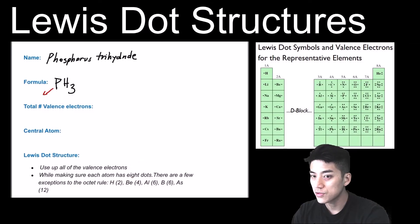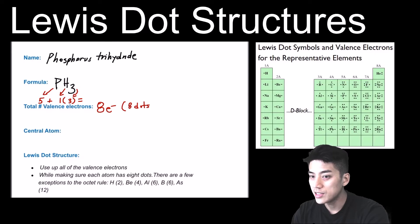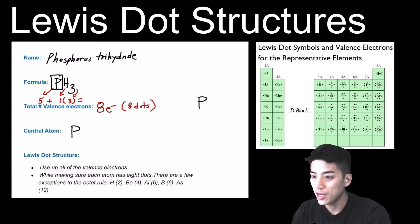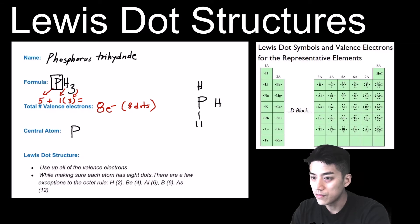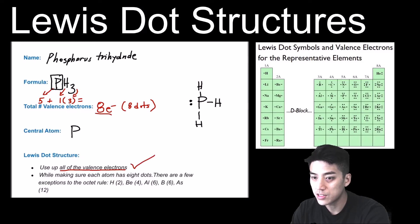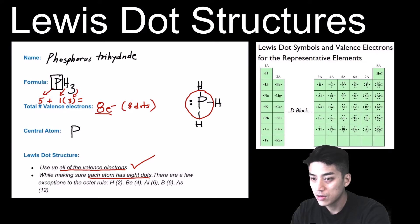Phosphorus trihydride is PH₃. Phosphorus contributes five electrons, and hydrogen contributes one — with three hydrogens that's three more. So one times three plus five gives eight electrons total. The central atom will be phosphorus, the lone leading element. I'll place three H's around it symmetrically — you can put the H in the six o'clock position if you prefer. Drawing three lines connecting phosphorus to each hydrogen and adding a lone pair of two dots on phosphorus uses all eight valence electrons. Phosphorus has eight electrons: three lines plus two dots equals eight.